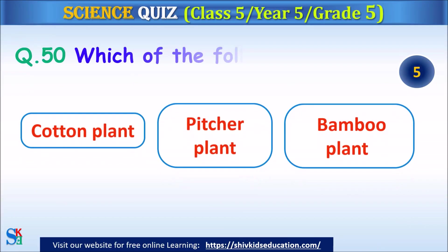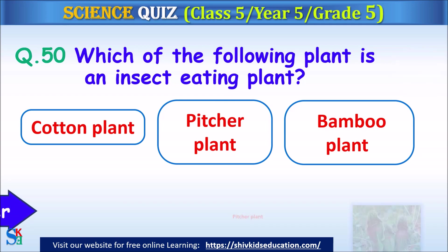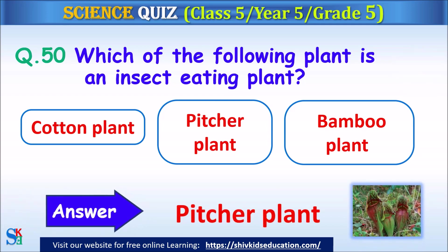Question 50: Which of the following plants is an insect-eating plant? The cotton plant, the pitcher plant or the bamboo plant? The answer is the pitcher plant.